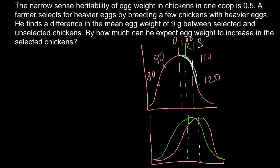We do see progress in egg weight, but not as much as we might expect. Why does this happen? Consider that all the eggs on the heavier shoulder weigh more, but we cannot say that all the parents producing those eggs are genetically superior to parents producing lighter eggs.